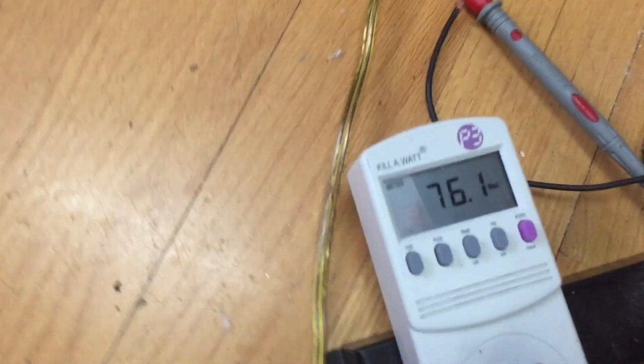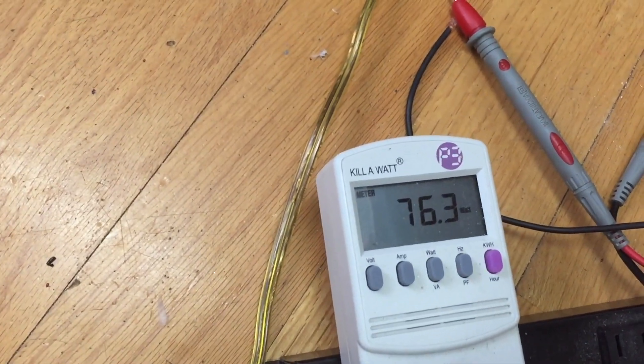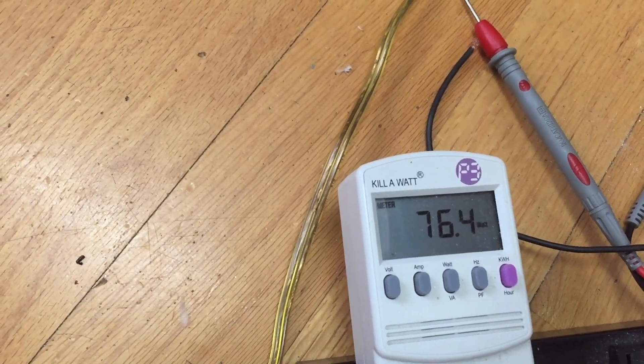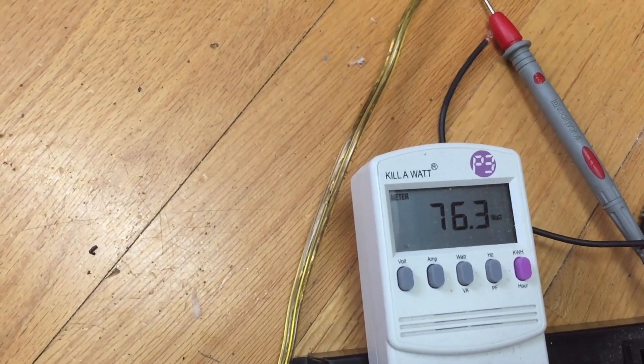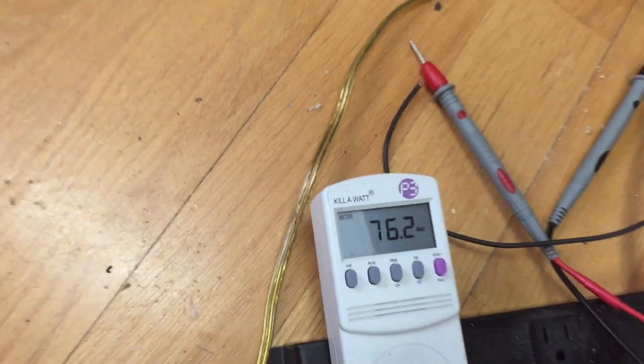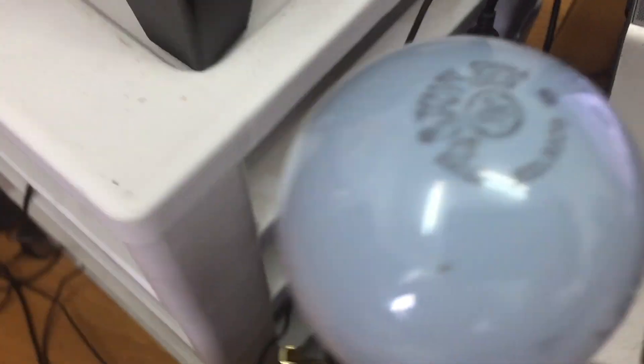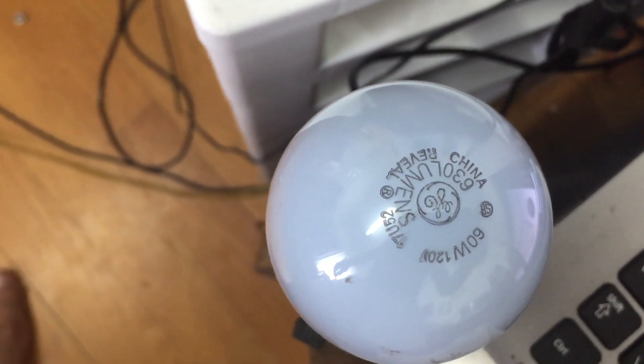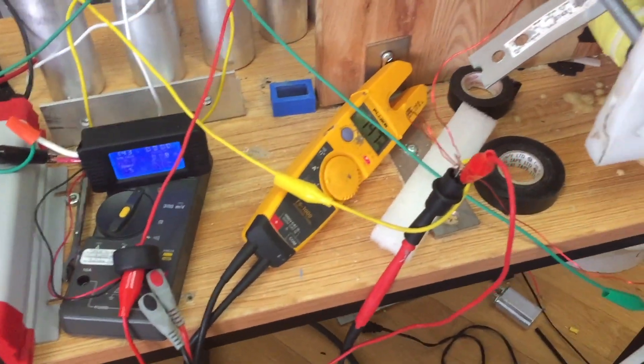And the power needed to move the coils or the motor with the magnet and the coils installed is 76 watts. Now I'm going to put the load on, which is 60 watts. I'm going to put it on and see what happened.